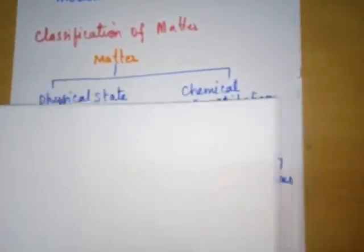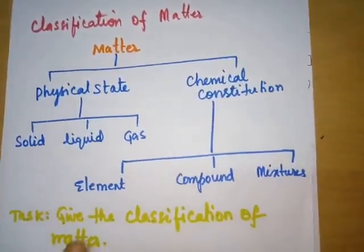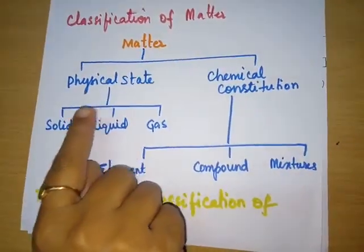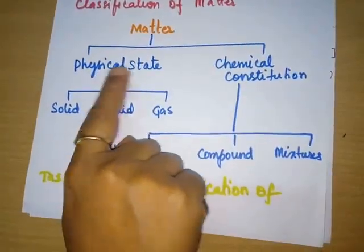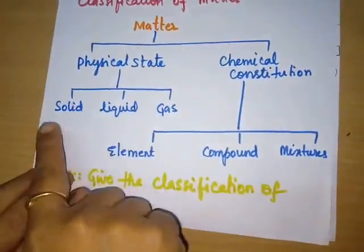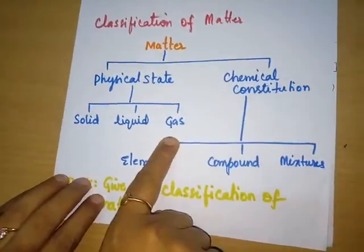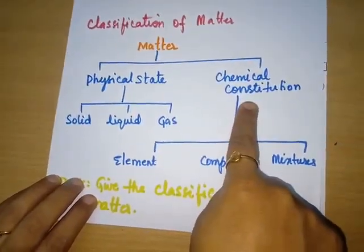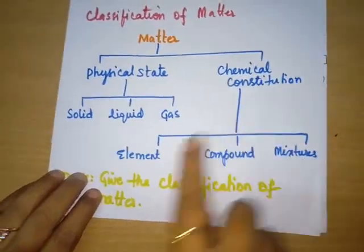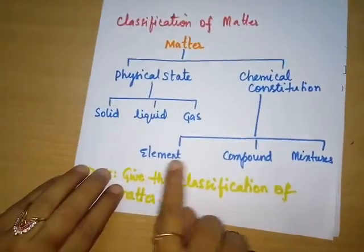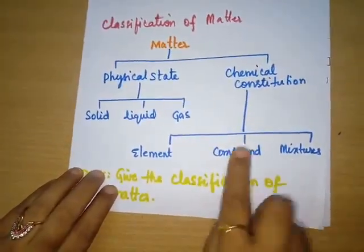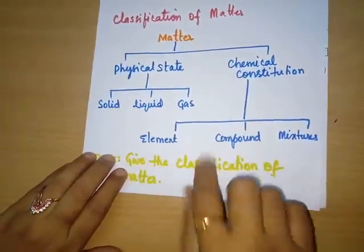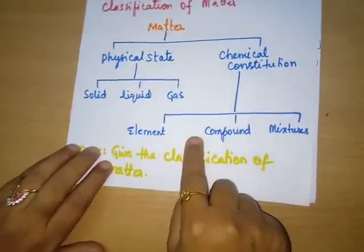Let us look into the classification of matter. There are two ways of classifying matter. One is based on physical state — it is classified as solid, liquid, and gas. The other way is based on chemical constitution, which is further divided into element, compound, and mixtures. This classification will be our next lesson, which we will discuss in detail.